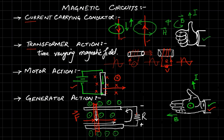To summarize: we studied how a current carrying conductor produces a magnetic field; how a time-varying sinusoidal voltage generates an EMF in another coil (transformer action); how a current carrying conductor inside a field generates force F (motor action); and how applying an external force F on a conductor in a magnetic field produces a voltage output (generator action). That was all for today — thank you very much.